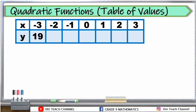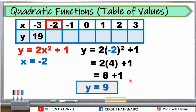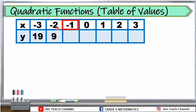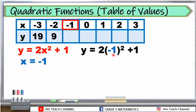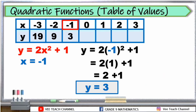How about negative 2? Same process — papalitan lang natin yung x ng ating equation ng negative 2. Substitute the value of x, negative 2, and simplify. Negative 2 squared is 4, then multiply by 2 plus 1. We have 8 plus 1, and the answer is 9. If x is equal to negative 2, y is 9. Next, kunin naman natin ang negative 1. Same equation — substitute negative 1 to our x, then simplify. Negative 1 squared is positive 1, then multiply by 2, then add 1. We have 3. Y is equal to 3.